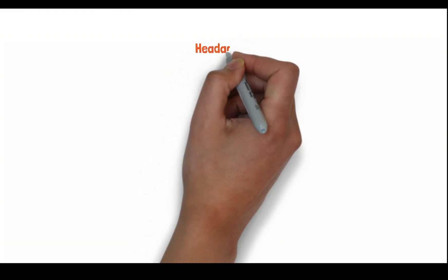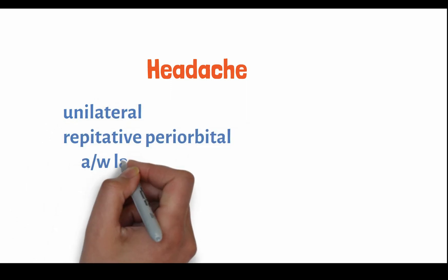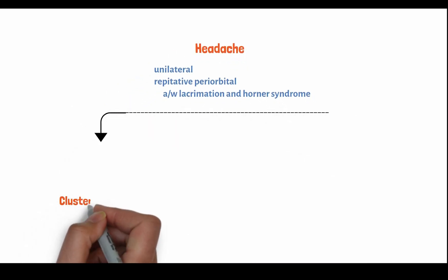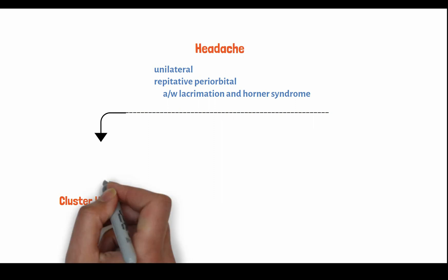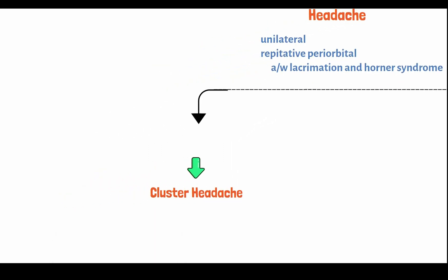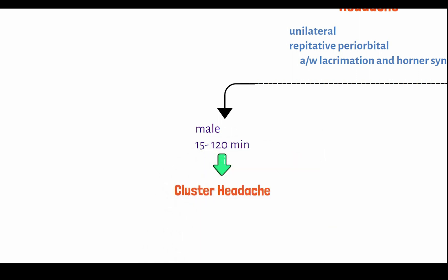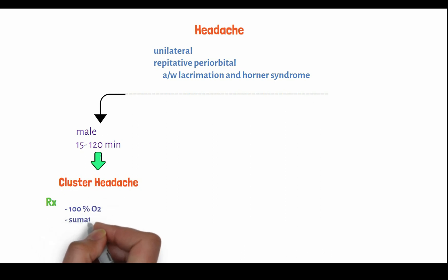Now, headache which is unilateral, repetitive, periorbital, and associated with lacrimation and Horner's syndrome — the first one is cluster headache. Cluster headaches are excruciatingly painful, recurring headaches that occur in clusters or groups, often at a specific time of day or night. They are characterized by severe one-sided pain usually around the eyes, lasting from 15 to 120 minutes, and can be treated with 100% oxygen. Sumatriptan and verapamil can also be used as prophylaxis.